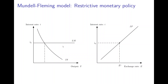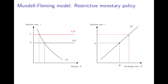Starting from the initial IS-LM equilibrium, when the central bank raises the interest rate, the LM curve shifts upward to LM'. The higher interest rate I1' reduces investment, lowering income. Additionally, the higher interest rate leads to an appreciation of the home currency, which reduces net exports because the Marshall-Lerner condition holds. Both effects together produce a lower income level at the new goods market equilibrium.